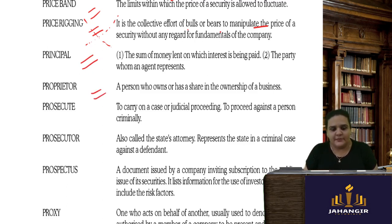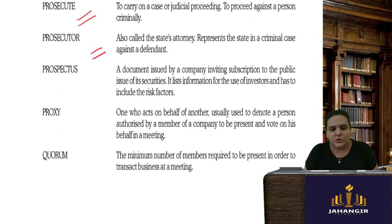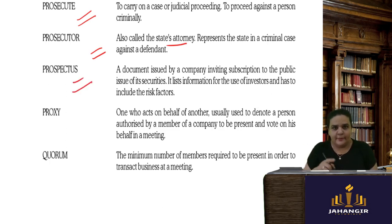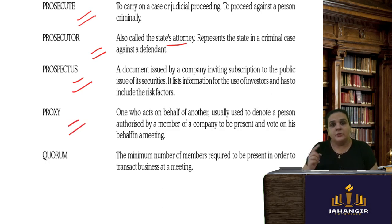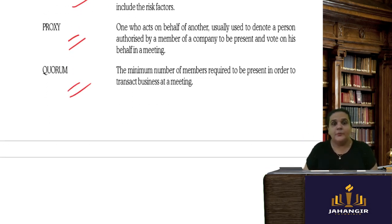A proprietor is the owner of the business. To prosecute is to carry on a case or judicial procedure. A prosecutor, also called the state's attorney, represents the state. A prospectus is a document issued by a company inviting subscriptions from the public for issue of securities. A proxy is a form signed by a shareholder who cannot attend a meeting, authorizing another person to attend in their place. Quorum is the minimum number of members or directors required to be present in a meeting as per law.